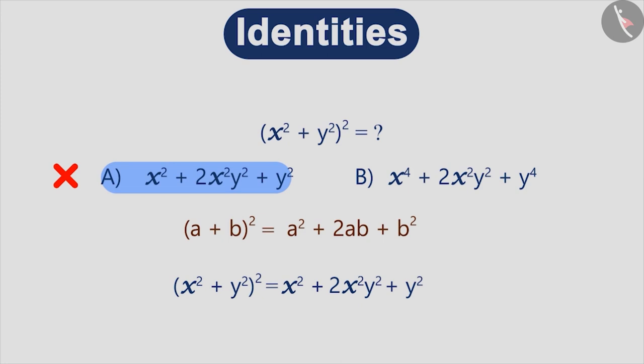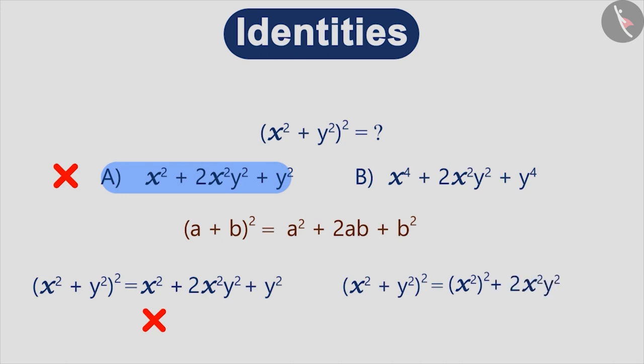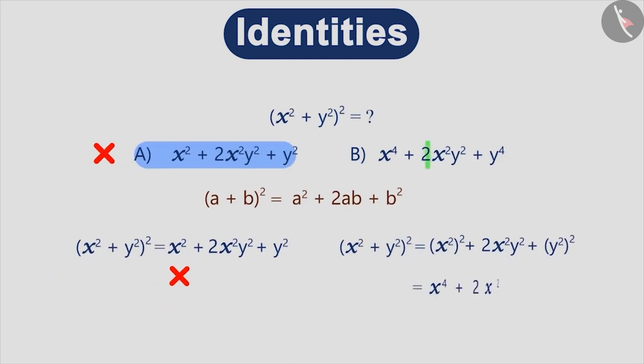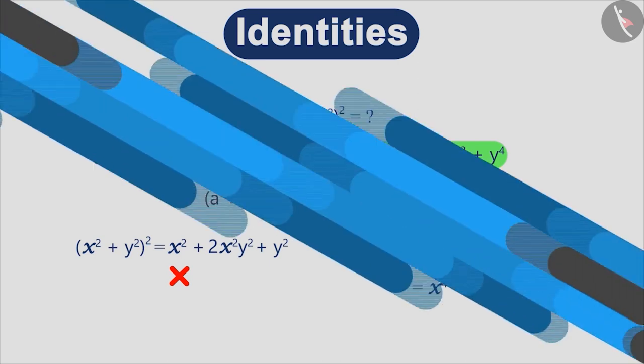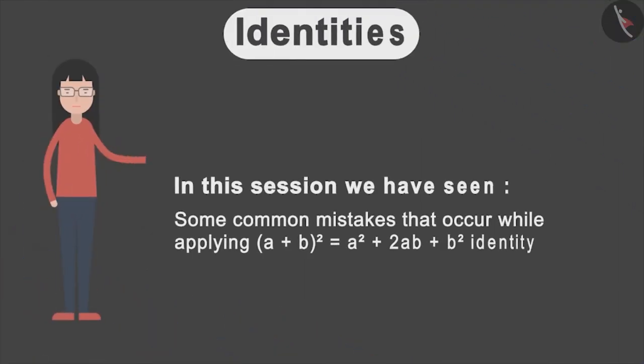As you can see here, we have not found the square of the first and second terms. So the right hand side of this expression will actually be (x²)² + 2x²y² + (y²)². Therefore the correct answer will be x⁴ + 2x²y² + y⁴. In this session we have seen some common mistakes which occur while applying this identity.